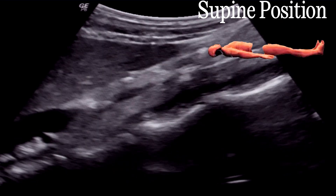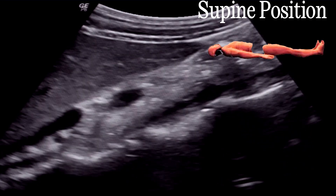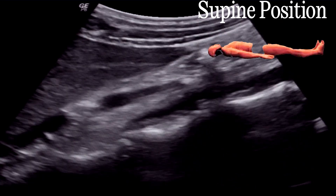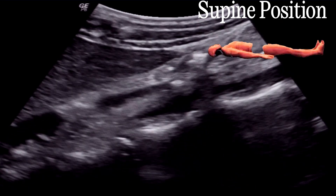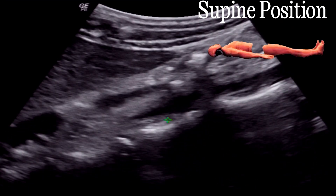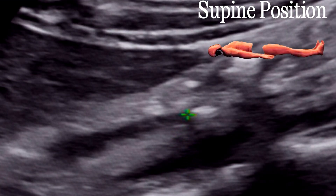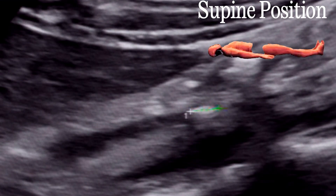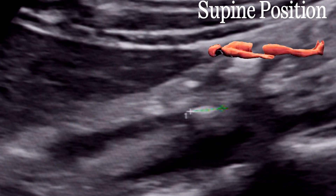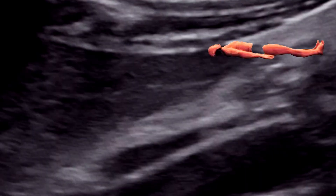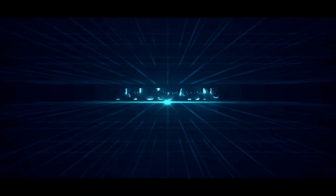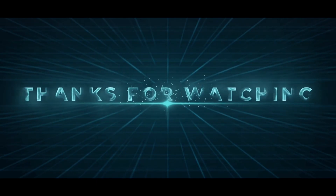Different patients have different positional variations — sometimes better visualized in the lateral decubitus position, and sometimes from the back. For every patient of kidney and ureter, try to visualize in all available positions. Thanks for watching the video.